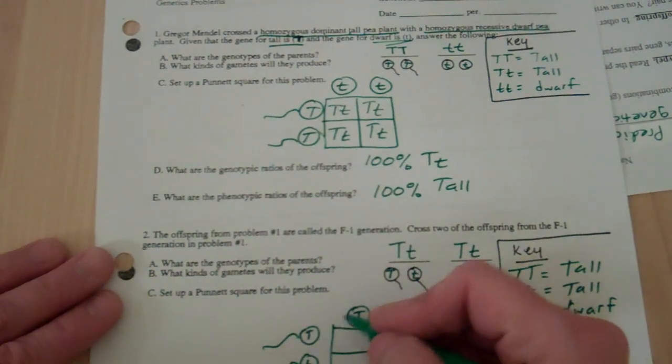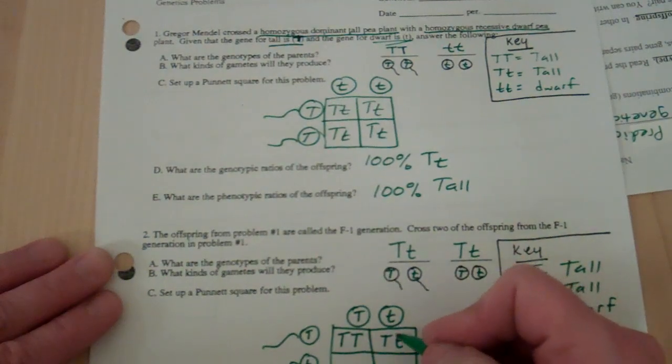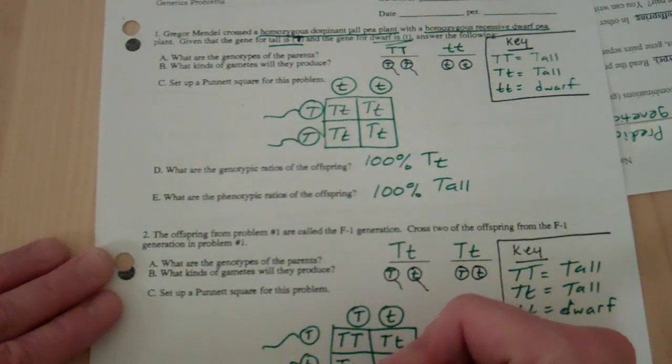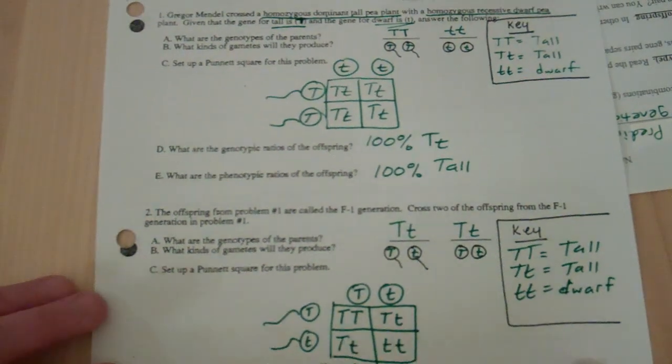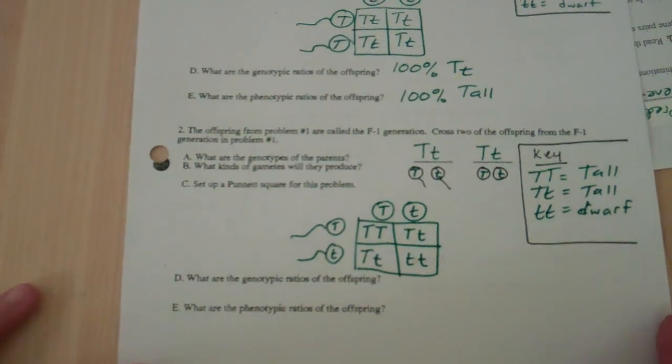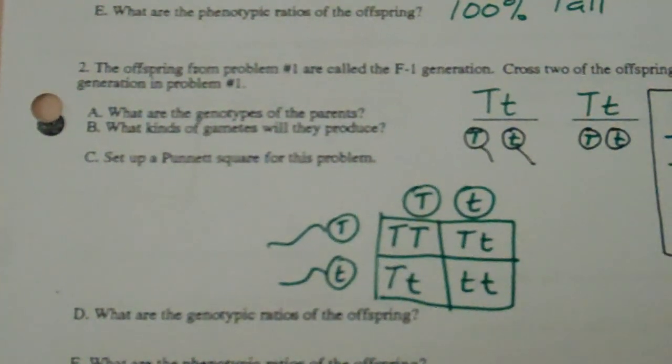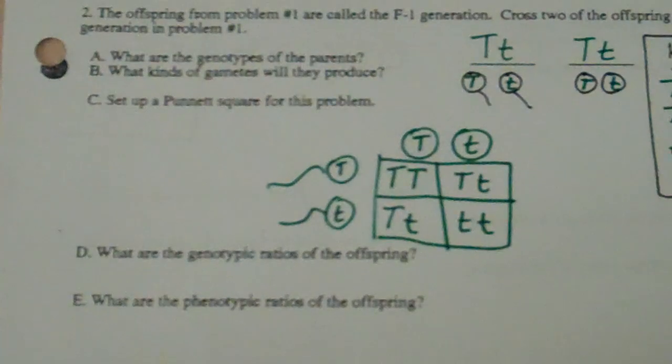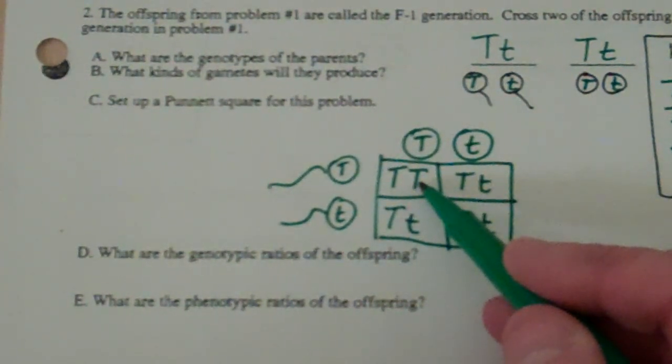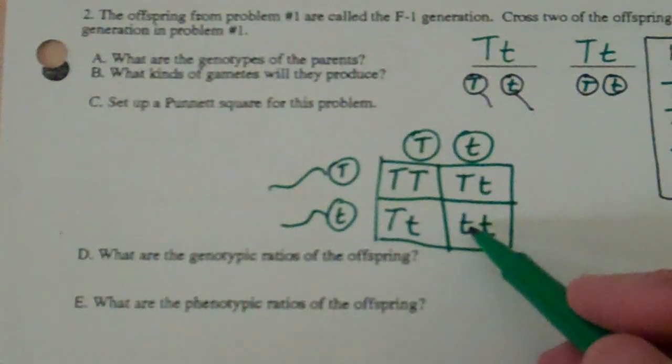Now join these egg and sperm together: homozygous dominant, heterozygous, heterozygous, homozygous recessive. What are the genotypic ratios? What is the genotypic ratio for the offspring? I have one of these, I have two of these, and I have one of these.